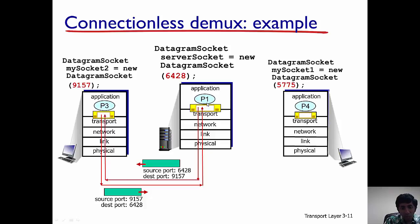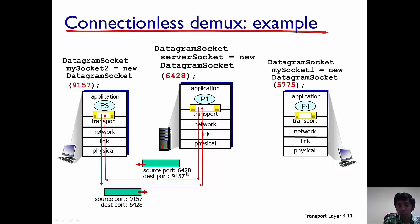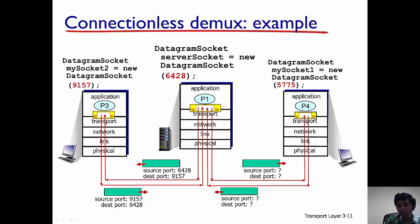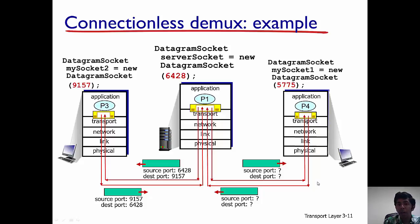When the server's process P1 contacts the client's process P3, the source and destination ports are reversed. The source port becomes 6428 because the transport segment originated at the server, and the destination port is 9157. When communication is going on between process P1 and process P4, I encourage you to figure out what the source and destination ports would be — this will help you better understand port numbers.